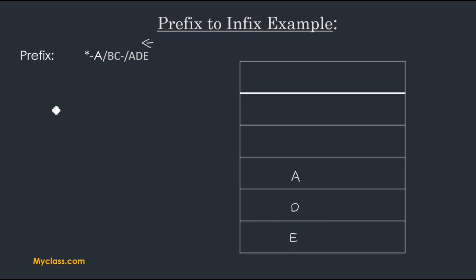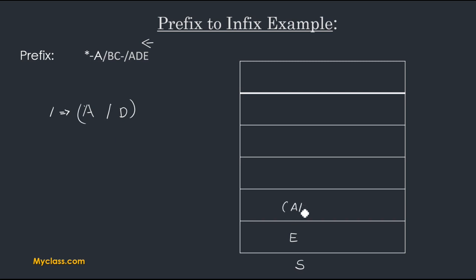Next an operator arrives — division. So we pop A, then we pop D, and make a string like this: A divided by D. After popping A and D, only one element S remains in our stack. We then push the whole string 'A / D' back into our stack as a new element.